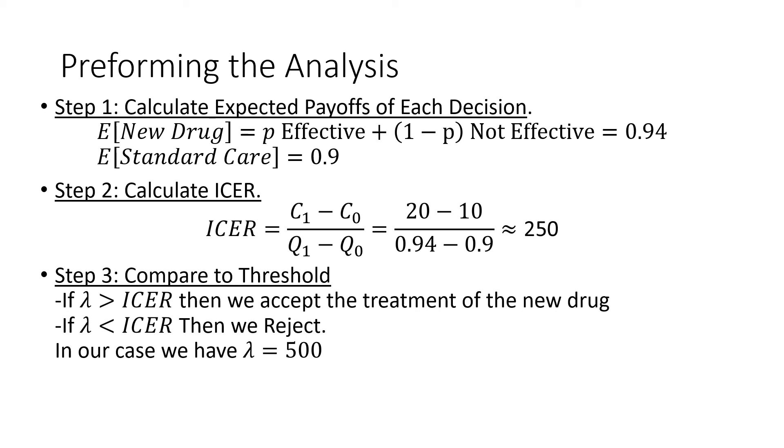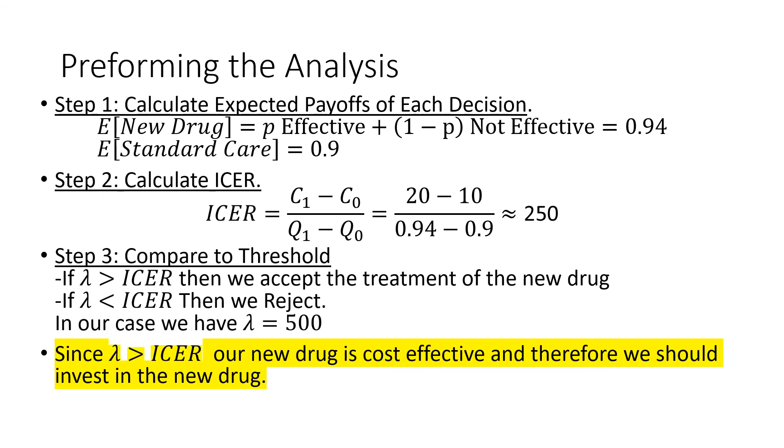In our case, we have a lambda of 500, that is our threshold. And since lambda is greater than our ICER, our new drug is cost-effective, and therefore we should invest in the new drug.